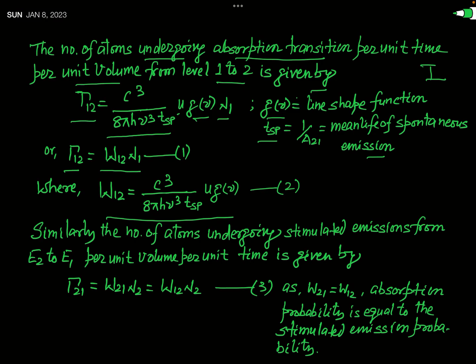Similarly, when atoms in the second level — the higher energy level — are excited by the incident radiation and undergo a transition from level 2 to level 1, the number of atoms undergoing stimulated emission from E2 to E1 per unit volume per unit time is gamma 2-1, equal to W21 times N2. Since the absorption probability and stimulated emission probability are equal, W21 equals W12, so gamma 2-1 equals W12 times N2.